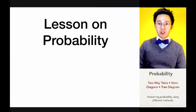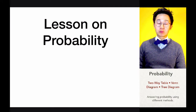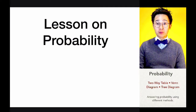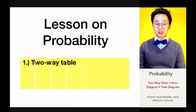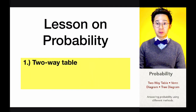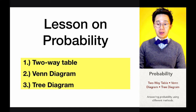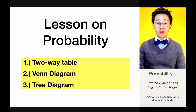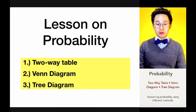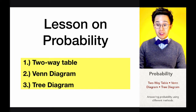Today we're going to be working on probability involving three methods: the two-way table, the Venn diagram, and the tree diagram. Let's go ahead and start with answering probability using the two-way table.